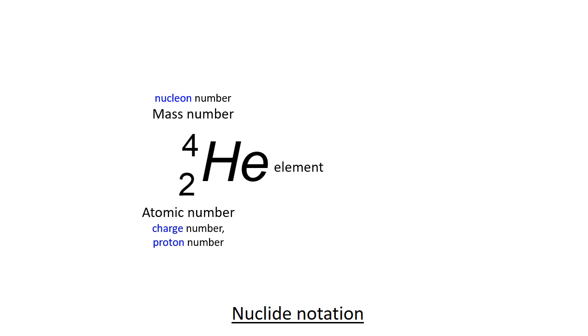And it's also the total number of nucleons. So in this case, there are two protons and two neutrons for a total mass number of four. So helium-4 has two protons and two neutrons.